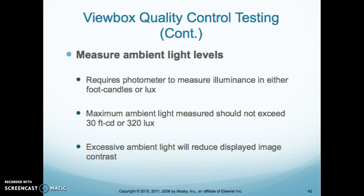Measuring the ambient light levels: you take the photometer and measure the luminance in either foot candles or lux. The maximum ambient lighting measured should not exceed 30 foot candles or 320 lux. Excessive ambient lighting will reduce displayed image contrast. If the room is too bright where you have the view boxes, you are not going to be able to see your image contrast well. We always dim the lights so that the light coming out of the view box really shows us our contrast.